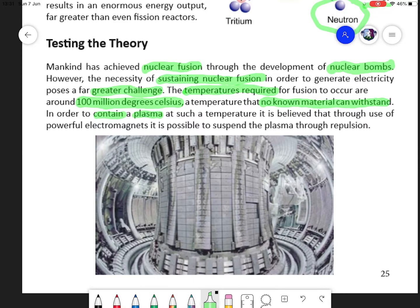That plasma can be suspended through use of electromagnetic fields. So if we use extremely powerful electromagnets, it is possible to cause a floating stream of plasma where this reaction is occurring at 100 million degrees or so.